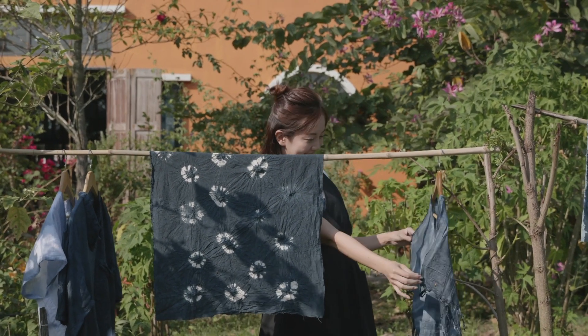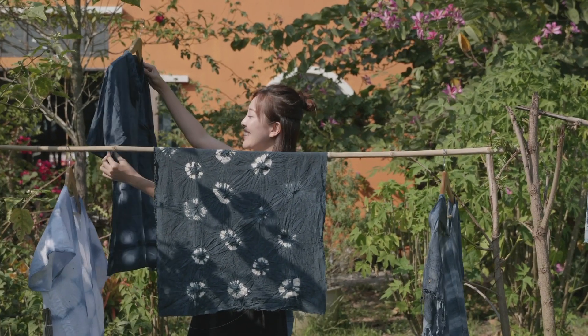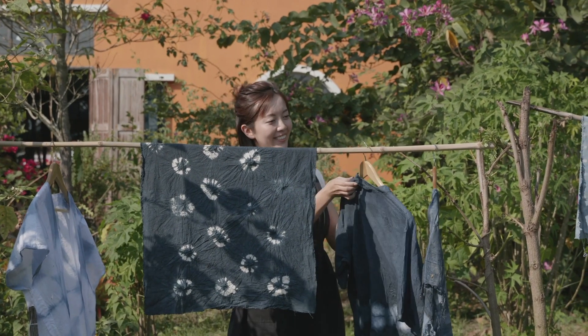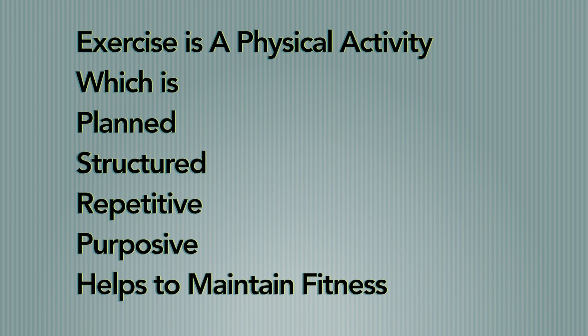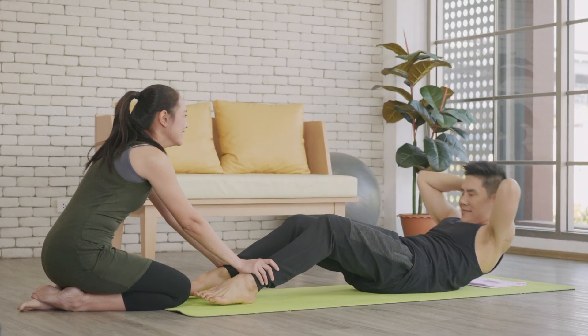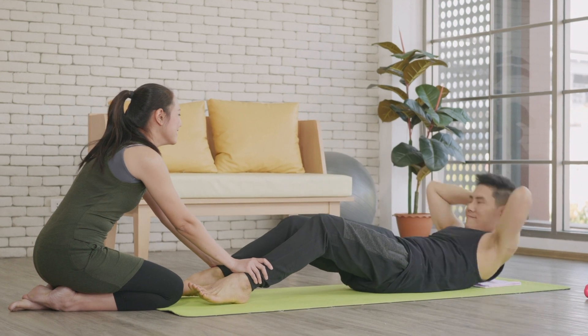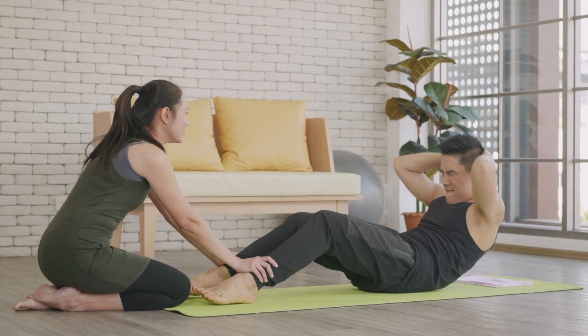Then why do we need exercise as a separate word? Exercise means it is also a physical activity, but one which is planned, which is structured, and which is repetitive, and it has a purpose. You have a plan, and then it is very well structured — for example, you do ten repetitions of abdomen exercises, five repetitions of biceps, whatever it is. It is a well-structured physical activity.